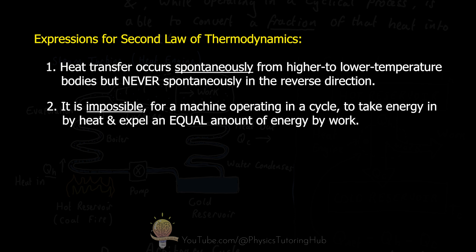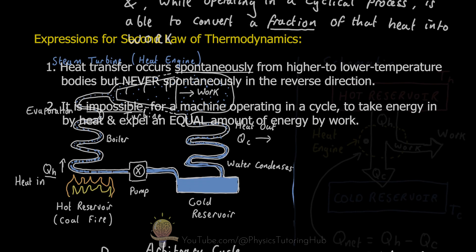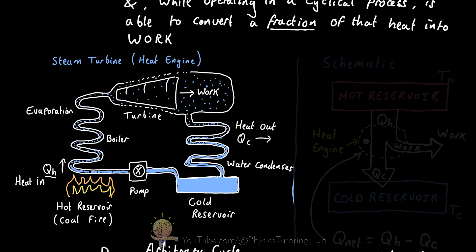Some of that heat will need to be dumped into the cold reservoir. The third expression for the second law of thermodynamics involves entropy, and we'll get into that in a future lesson. The point the second law is making is that a heat engine — whether that's a diesel engine, a gasoline engine, a power plant, a steam locomotive, whatever the case may be — can never be 100% efficient. Some energy is always lost as heat to the environment.